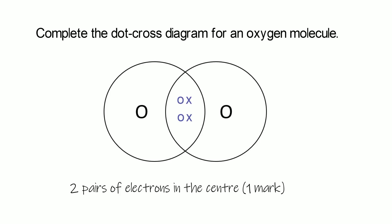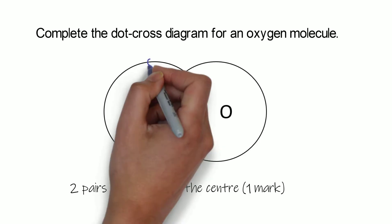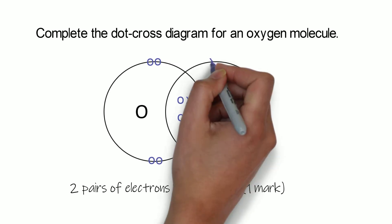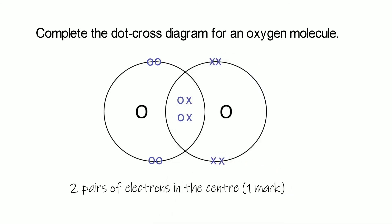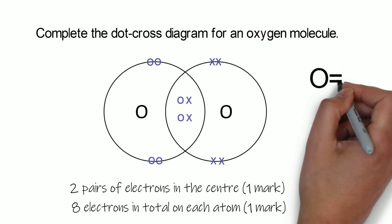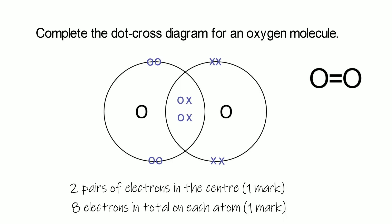We also need to make sure both atoms have a full outer shell. They've currently got four in the middle each, so they just need an extra four around the outside — they can't have more than eight including the ones in the middle. We get our second mark for drawing four electrons on the outer shell of each atom. This is a double bond because there are two pairs in the centre, and you might see it drawn with an equals sign between the atoms.